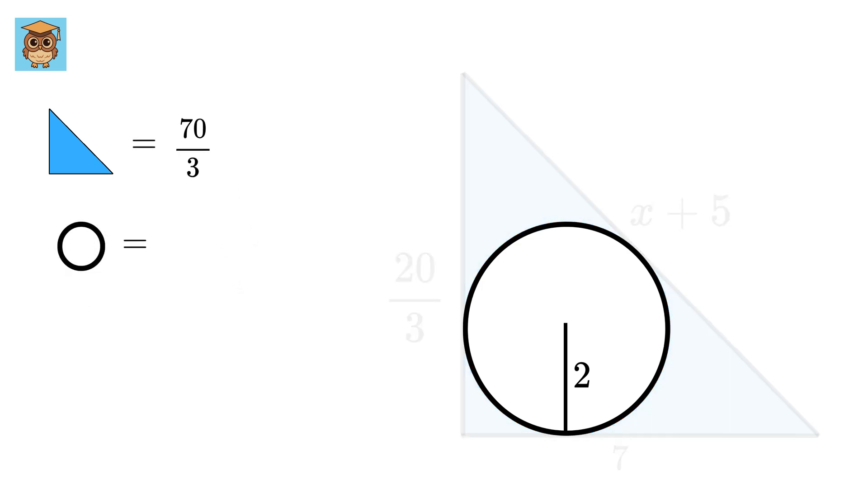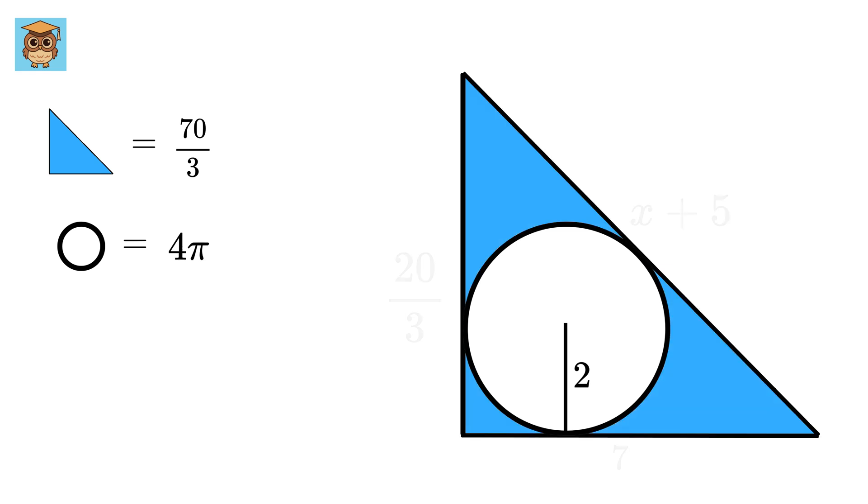And the area of this circle will be πr², or π times 2², or 4π. So the area of this shaded region will be 70/3 minus 4π. Cool!